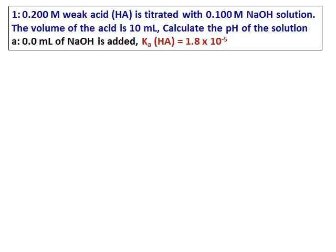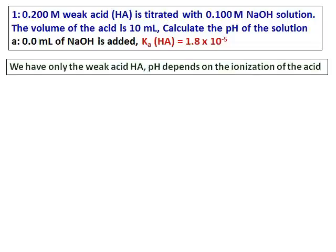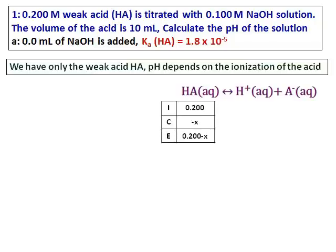Let's do the first part of the question. When 0 mL of sodium hydroxide is added, this is the point where I have only the weak acid, and therefore the pH will depend on the ionization of the acid. Write down the ionization of the acid, then write down the ICE table.